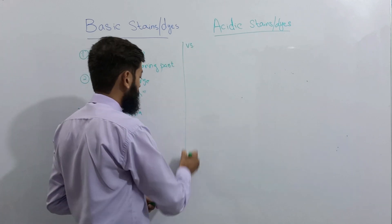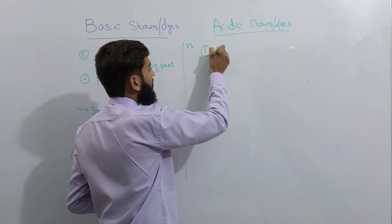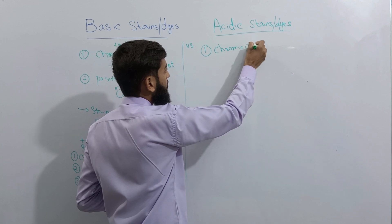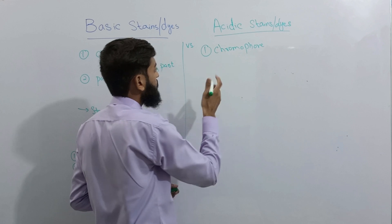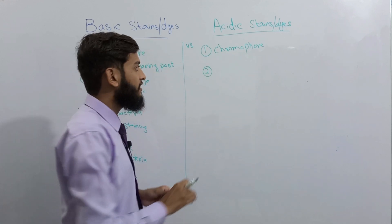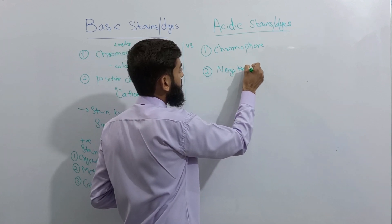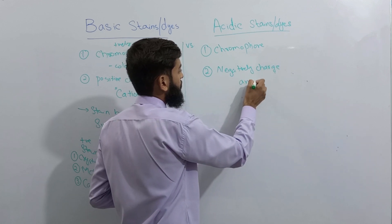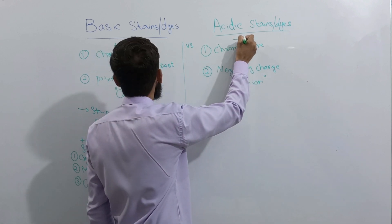If we talk about acidic stains, they also have two parts. The first part is also a color-bearing part — we call it the chromophore — that will produce color and color the bacteria during the staining procedure. The second part is a negatively charged particle, and this negatively charged particle is known as an anion. So acidic stains have an overall negative charge on them.